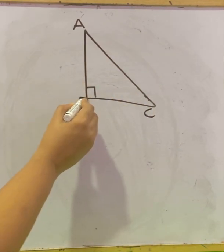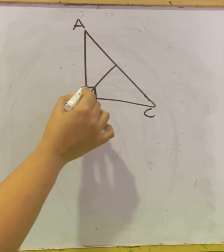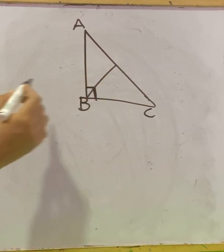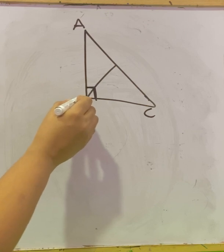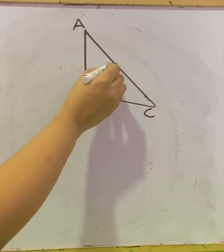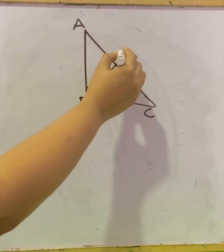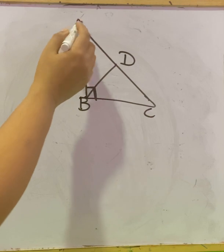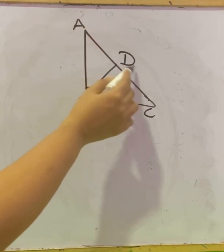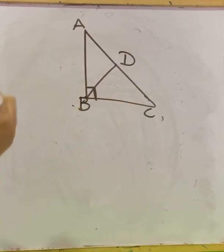Next we will draw a perpendicular line from vertex B, the 90 degree angle, to the other side AC. Now let us name this point as D. You can find so many triangles here — that is triangle ABD, triangle BDC, and triangle ABC. Three triangles.